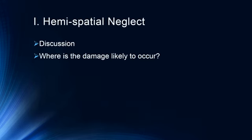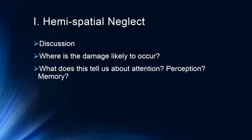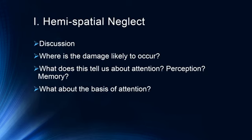So where does this damage likely occur? Obviously, I've already had a little bit of discussion of this. If it's the left side being neglected, the damage is of course on the right side of the brain, because the right side controls the left side. As we go through talking about hemispatial neglect, we're going to think about what we can learn about attention, what we can learn about perception, and what we can learn about memory, because each of these issues will come up throughout this discussion, and then finally, what is the basis of attention.